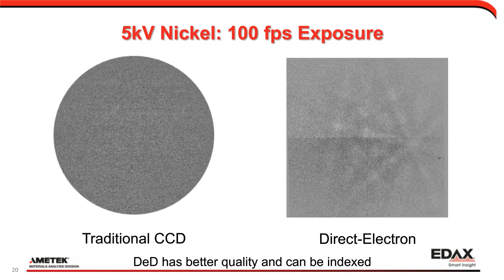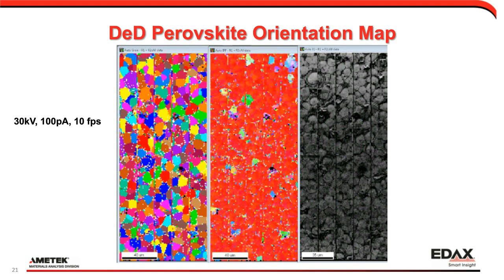As a map example on a very difficult sample — perovskite, which has a complex crystal structure, low density as an oxide giving it a low backscatter coefficient, and is easily damaged — the experiment was run at 30 kV but only 100 picoamps, very slowly at about 10 frames per second. The resulting map is unprocessed raw data with some noise pixels but is very high quality for an extremely difficult sample. The direct electron's higher sensitivity and lower noise make it possible to work on such challenging samples that some researchers encounter every day.